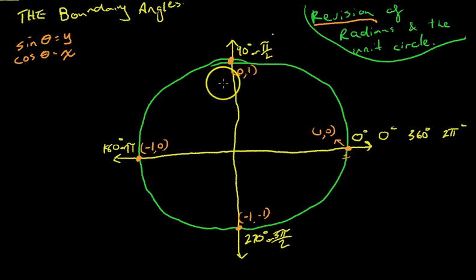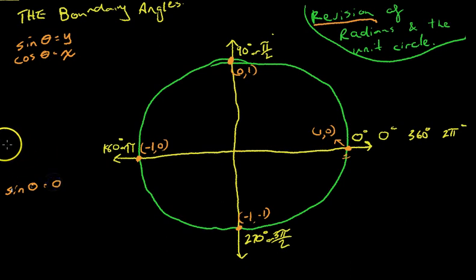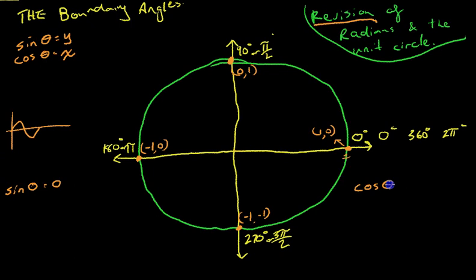Using this information, we can now come up with some values for our boundary angles. Sine 0 is equal to whatever the y value is when the angle equals 0, and you can see that our y value is equal to 0 — so sine 0 equals 0. You'll also know that because you've seen sine functions before. Compare and contrast: cos 0 is equal to whatever our x value is when the angle equals 0, and that's 1.